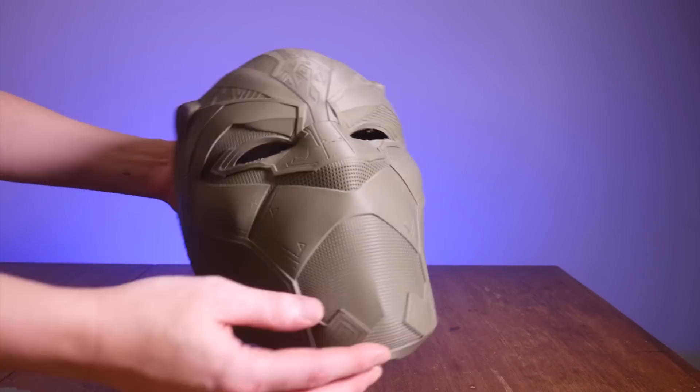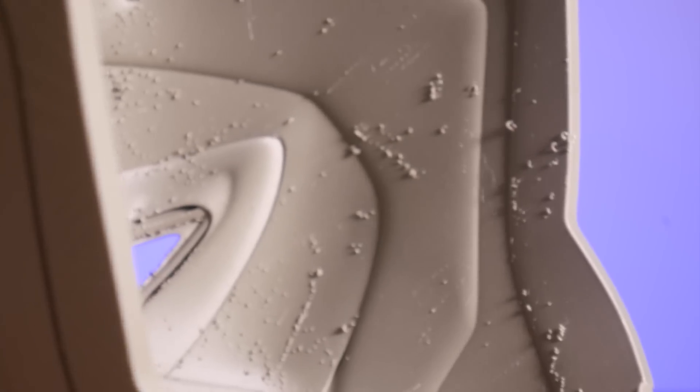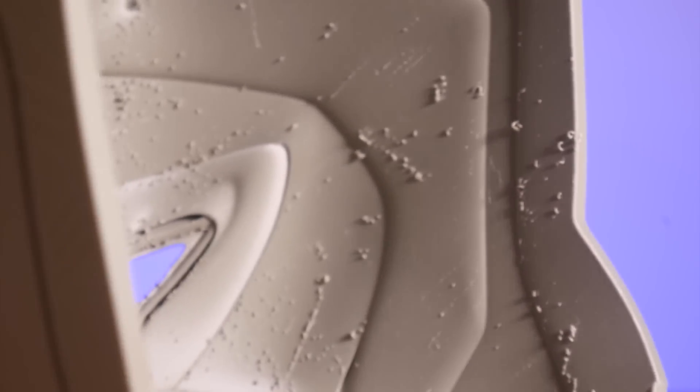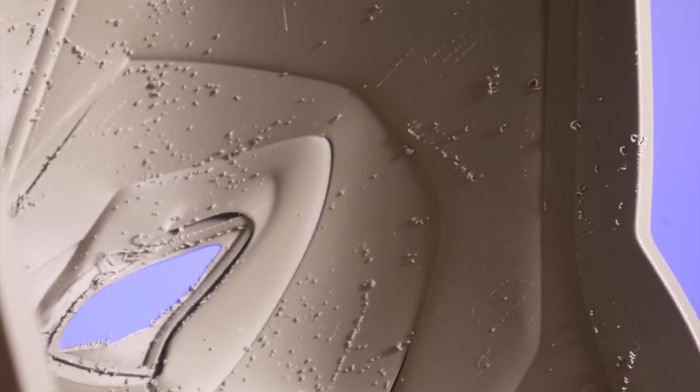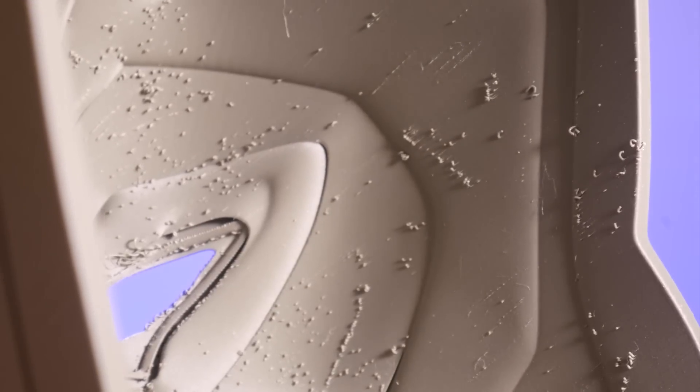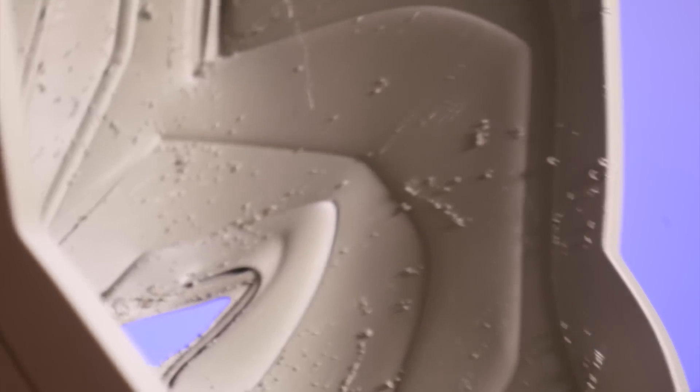You can see that most of the retractions happened on the inside of the mask, leaving some blobbing. I suspect this was due to low travel speed and some incorrect retraction settings. In any case, these blobs mostly wiped away when I ran my finger over them.